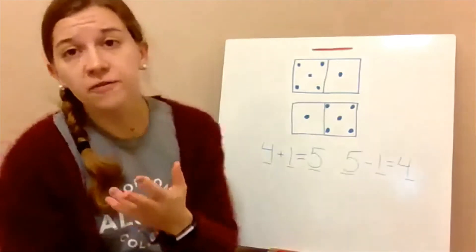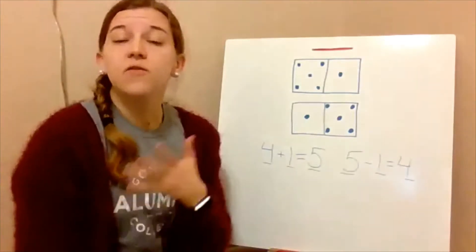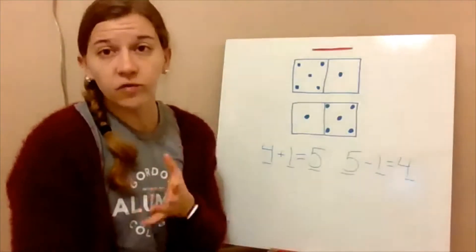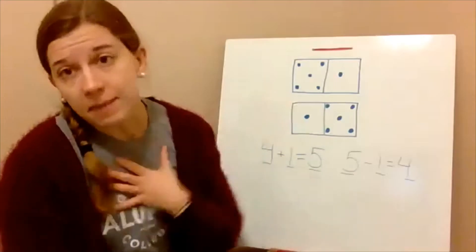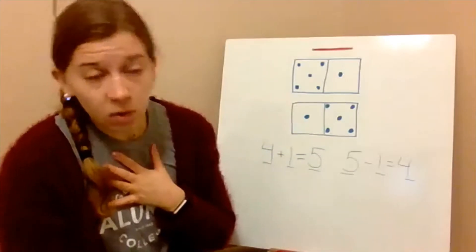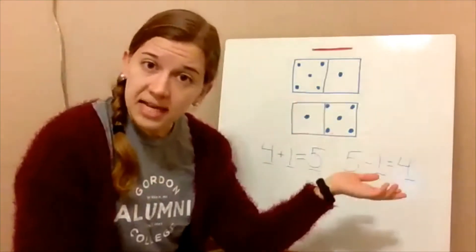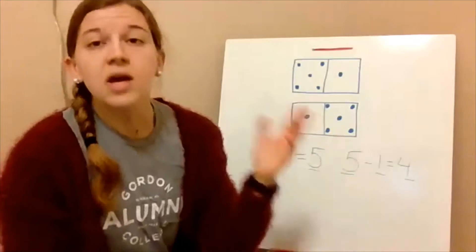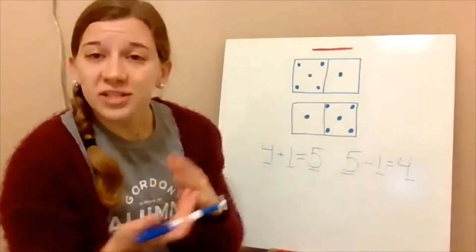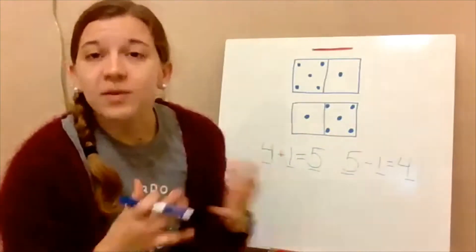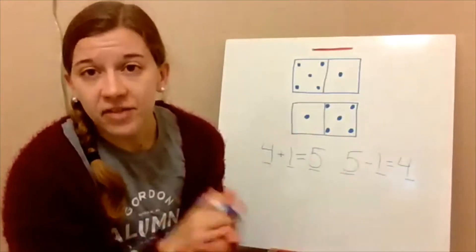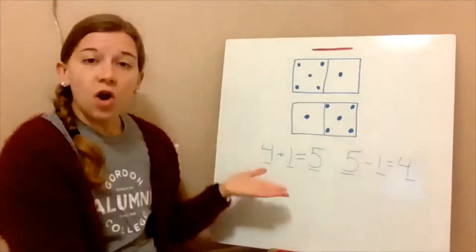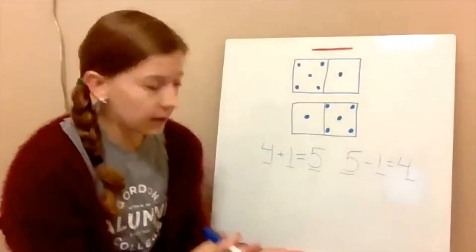Just like oftentimes families will have the same last name if you're all part of a family — like my last name is Rabideau, my parents' last name is Rabideau, my brother's last name is Rabideau — so just like families often have that, fact families have all the same numbers.